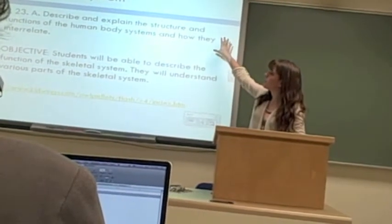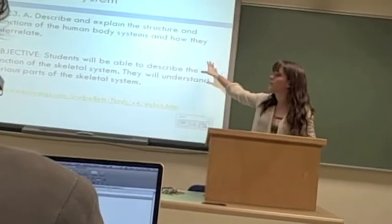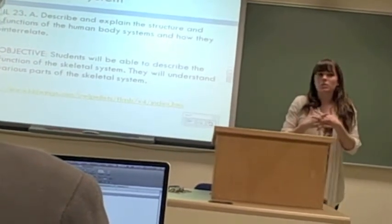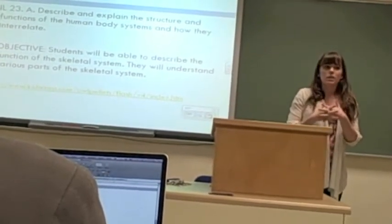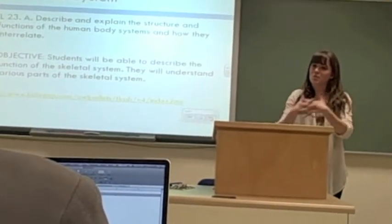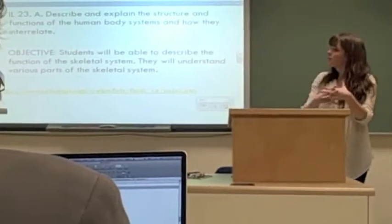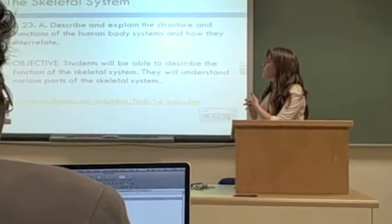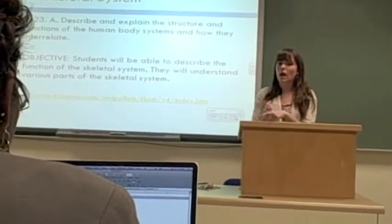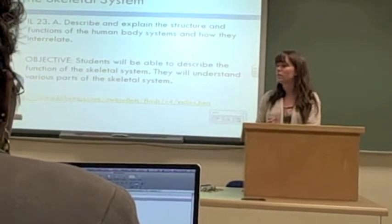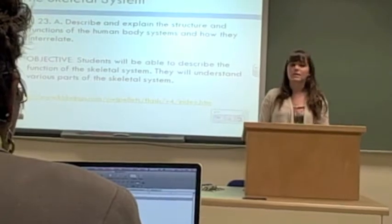This is an overarching objective: describe and explain the structure and functions of the human body systems and how they interrelate. You'll see through my lessons, a lot of what I try to do is tie everything together because each human body system can't function without the other. So that will be a theme throughout. And my objectives are similar in that I want each student to understand how the system itself works, the parts of the system, and then how it relates to everything else.